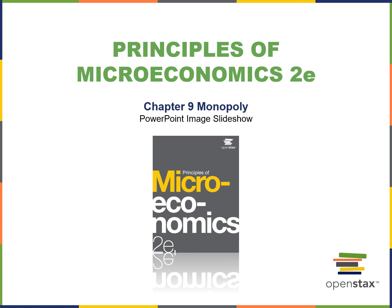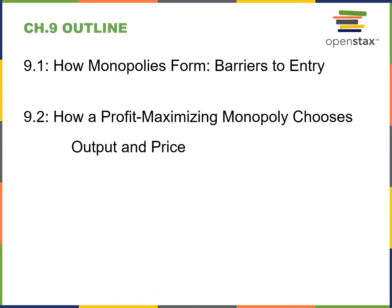Principles of Microeconomics, Chapter 9: Monopoly. We're going to talk about how monopolies form and how a profit-maximizing monopoly chooses output and price.